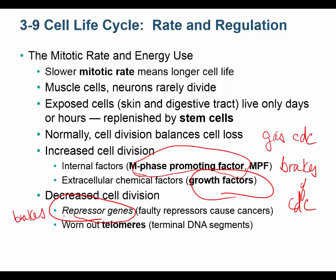To get cancer, two things have to happen. First, you have to turn on the gas uncontrollably — it's always on. Maybe you have too much growth factor, too much mitosis-promoting factor, or maybe the receptors are always on even in the absence of growth factor. But this alone doesn't give you cancer, because even though your cells are receiving the signal to divide all the time, you still have good brakes. The second thing that has to happen is you have to remove the brakes. If your gas is always on and your brakes are always off, you get cancer. But both of these have to occur — just one occurring doesn't give you cancer.